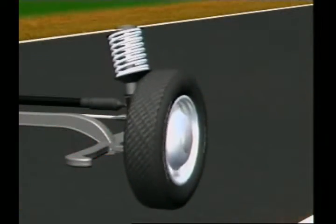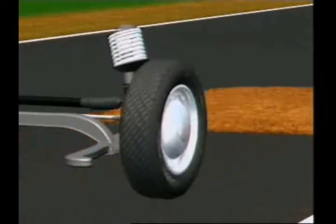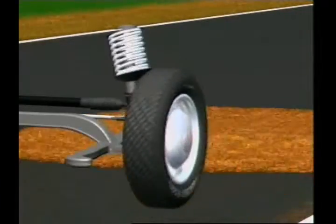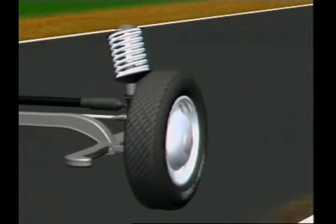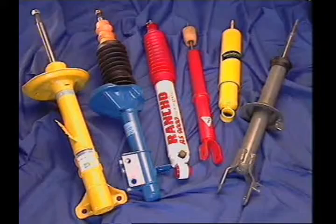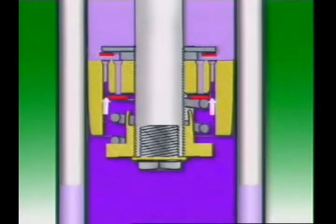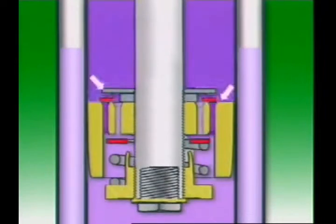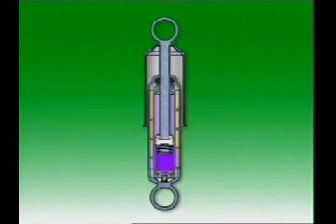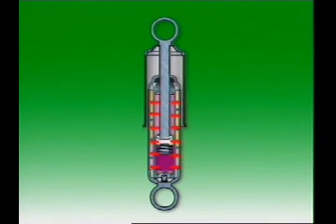When a wheel strikes a bump, there is a reaction force and energy is transferred to the spring, which makes it oscillate. Oscillations left uncontrolled can cause loss of traction between the wheel and the road surface. Shock absorbers dampen spring oscillations by forcing oil through small holes; the oil heats up as it absorbs the energy of the motion, and this heat is transferred through the body of the shock absorber to the air.